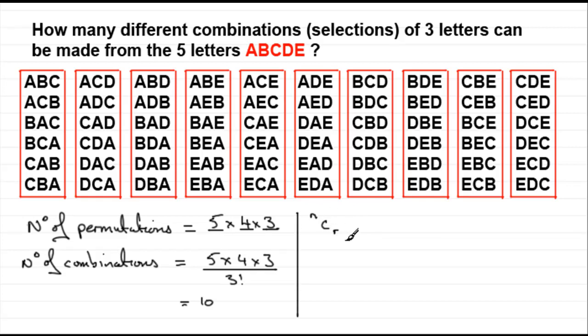Now NCR is defined as n factorial divided by n minus r factorial, all divided by r factorial.